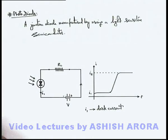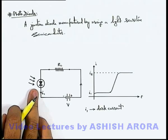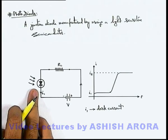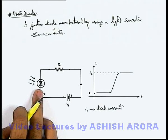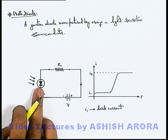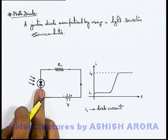allowed to incident on the junction of the diode, which is made up of a light-sensitive material and coated by a transparent material so that light can be incident on the junction directly. As soon as light is incident on it...